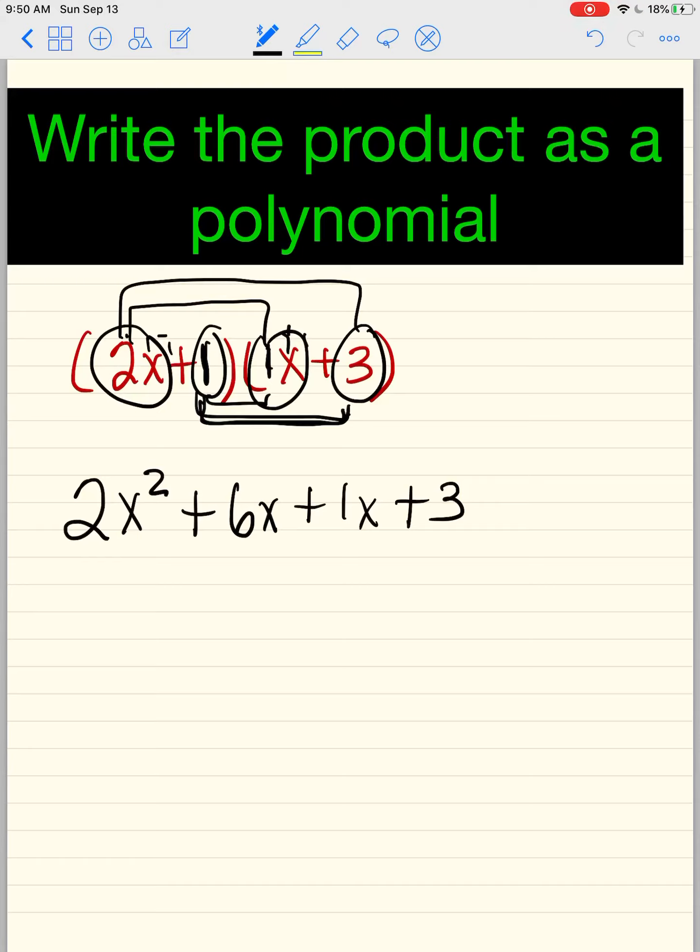Now you remember from the addition videos that if they look the same and they match perfectly, you see how the x matches perfectly, you can combine them. So that's 7x and that's 3. So this is what we call a polynomial or a trinomial. This is your final answer. Nothing can be combined because in order to combine them, the exponents must match perfectly and they don't. So you don't put those together. Let's try another one.